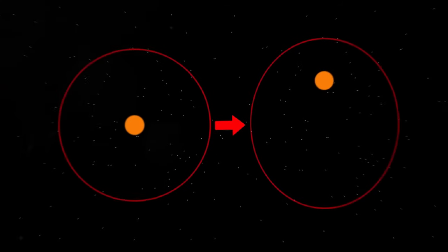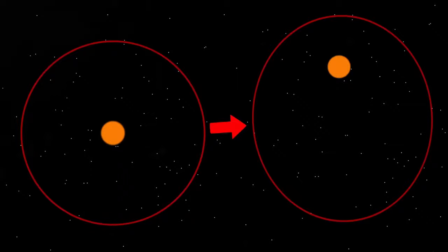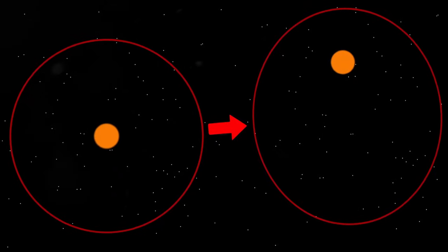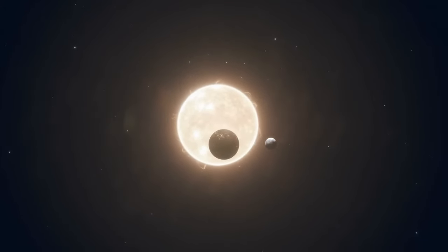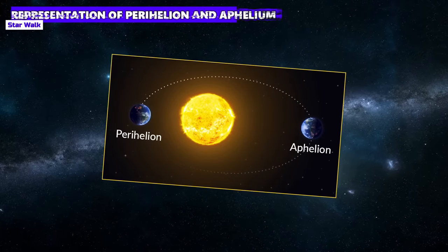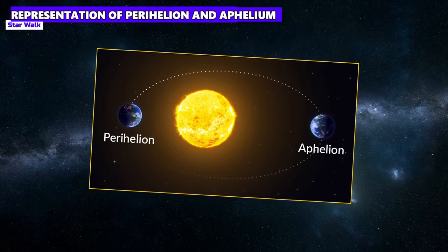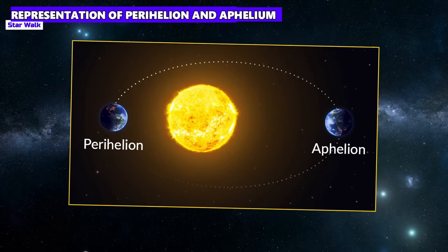Perhaps the most important Milankovitch cycle is the elliptical cycle. Over a period of hundreds of thousands of years, the Earth's orbit around the sun becomes less elliptical and then more elliptical again. The less elliptical the Earth's orbit, the more constant its temperature. When the orbit becomes more elliptical, there are strong temperature fluctuations and the maximum temperatures in both directions become more extreme. The Earth reaches its closest point to the sun — the perihelion — on the 3rd of January, and its furthest point — the aphelion — on the 4th of July. So in the northern hemisphere winter, the Earth is closest to the sun, which makes our winters a little more pleasant and our summers a little milder than they would otherwise be.